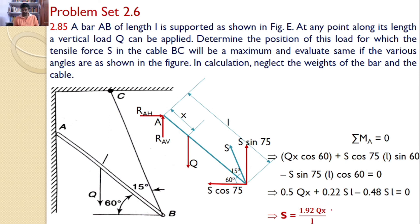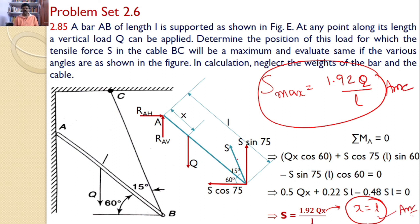For S to be maximum, what is the maximum value of x? x is equal to L. If x is equal to L, S we will get the maximum. And what is the maximum value? S max is equal to 1.92 into Q is the answer. And x is equal to L is the another answer for the given problem.